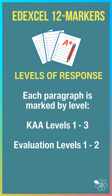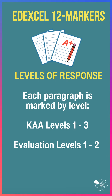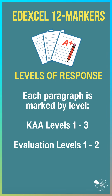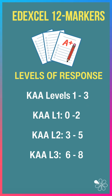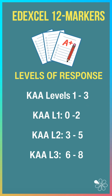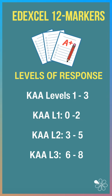The examiner will read each paragraph and diagram and assign it a level. Three levels for knowledge, application, and analysis, and two for evaluation. The 12 marker is very similar to the 10 marker except for the two extra marks for KA, so we're looking for a slightly longer answer or perhaps a well-developed supporting diagram.